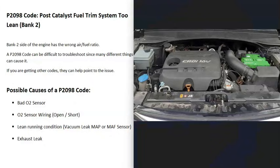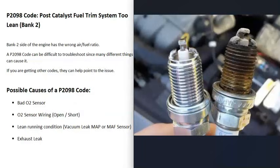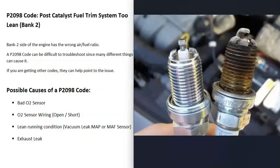One method to troubleshoot this is to remove the spark plugs on bank 2 and check how they're burning, then match them up to an online spark plug burn chart. For example, if the tip is really white, that means it's burning lean, and if it's really dark and black, that means it's running rich. This lets you check for a lean condition on that side of the engine.